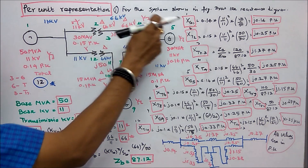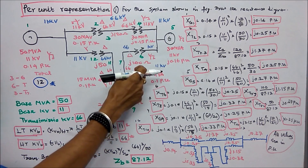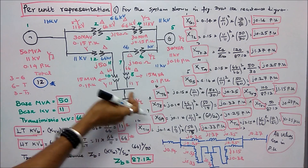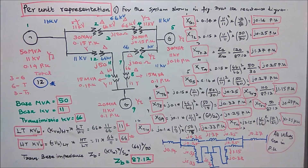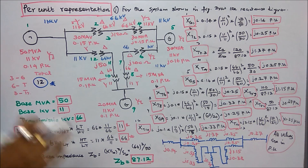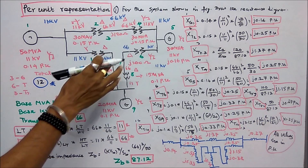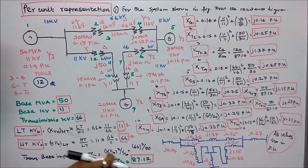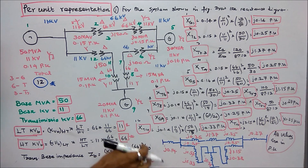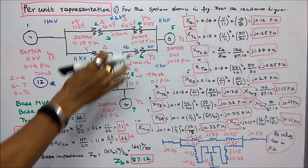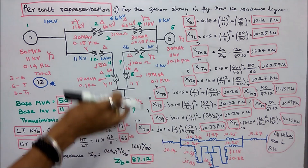The bus voltages are labeled: generator sides at 11 kV, transmission sides at 66 kV, across all transformers. Next, find the base impedance for the transmission line region: base impedance = KVB² / SB = 66² / 50 = 87.12 ohms. This base impedance will be used to convert transmission line values from ohms to per unit.